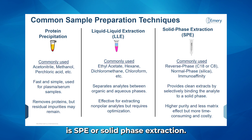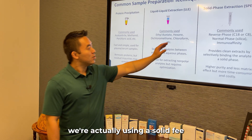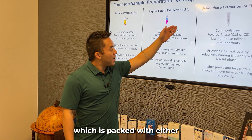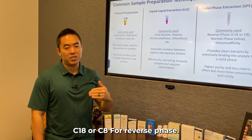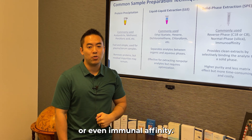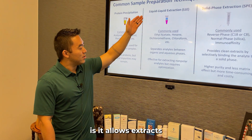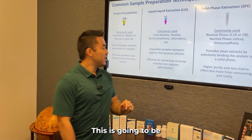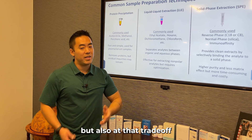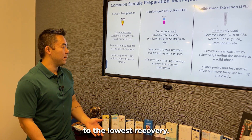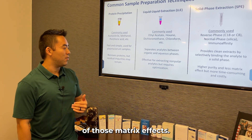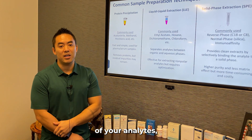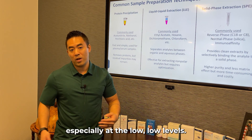The third most common is SPE, or solid phase extraction. Here we're using a solid phase such as an SPE cartridge packed with either C18 or C8 for reverse phase, silica packing for normal phase, or even immunoaffinity. This allows extracts to be cleaned by selectively binding the analyte to the solid phase resin. This is the most thorough cleaning process, but also with the trade-off of potentially the lowest recovery. So even though your samples are highly pure with fewer matrix effects, it does take more time, is more resource intensive, and depending on the sensitivity of your analytes, you may lose some of them, especially at very low levels.